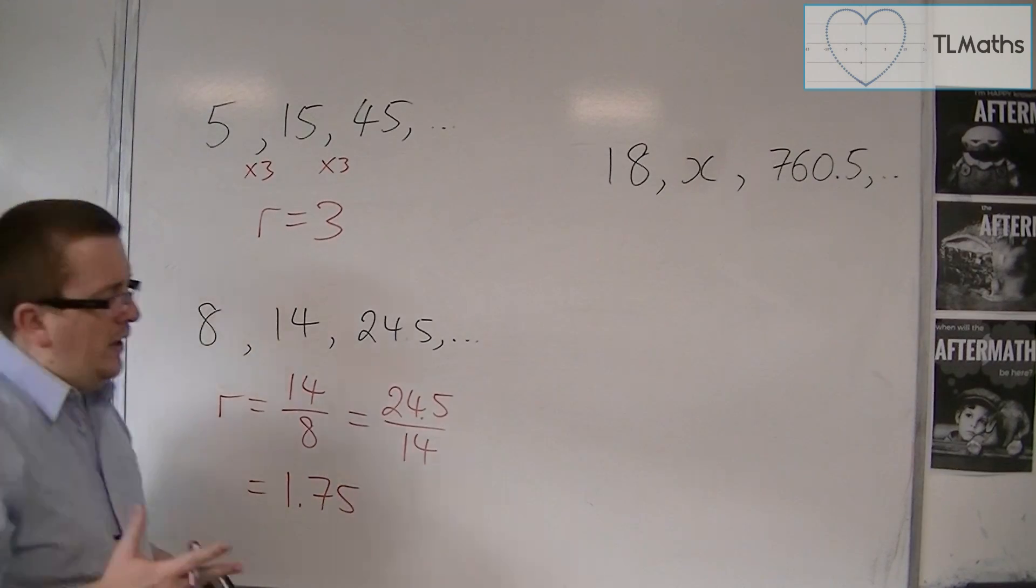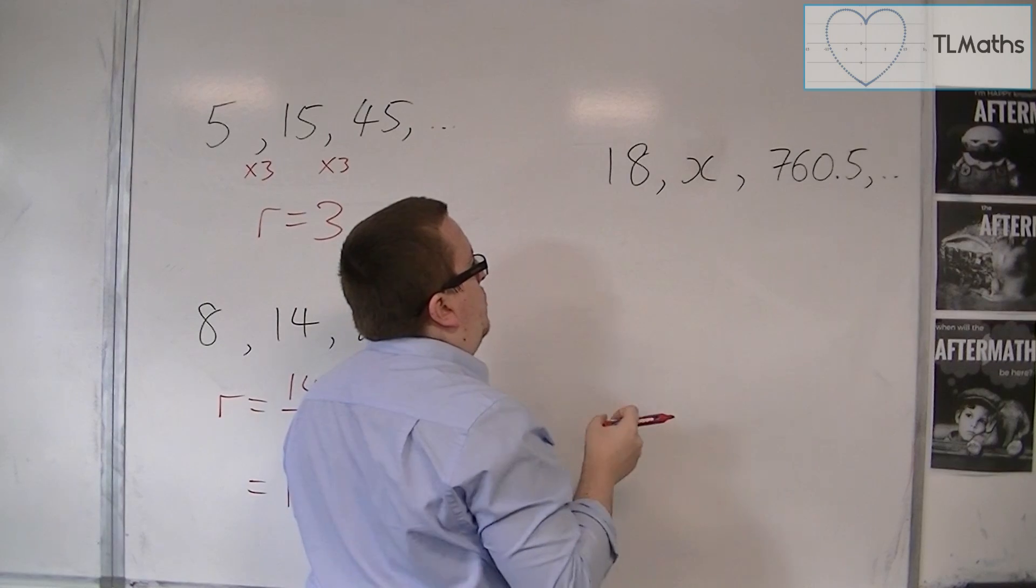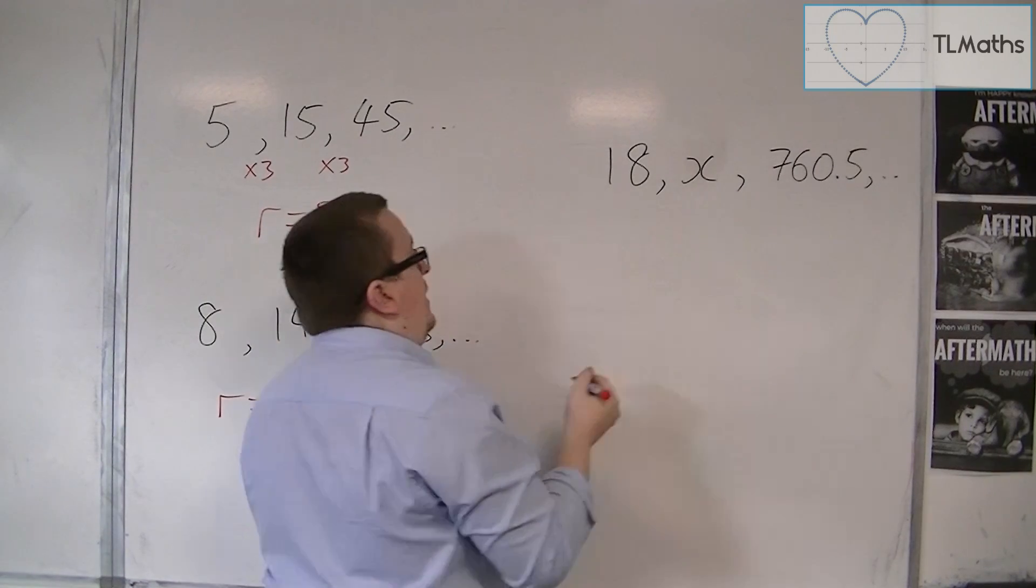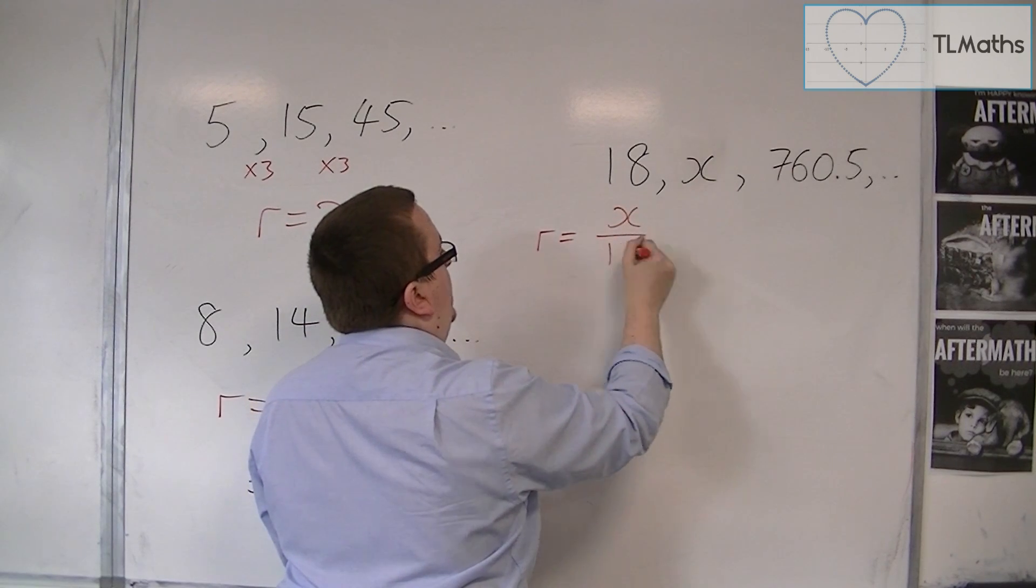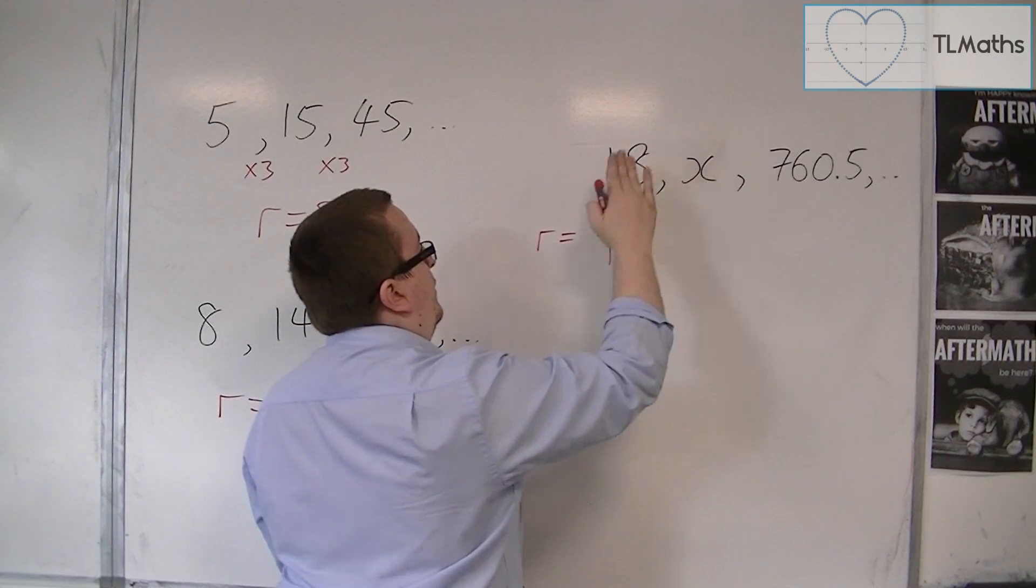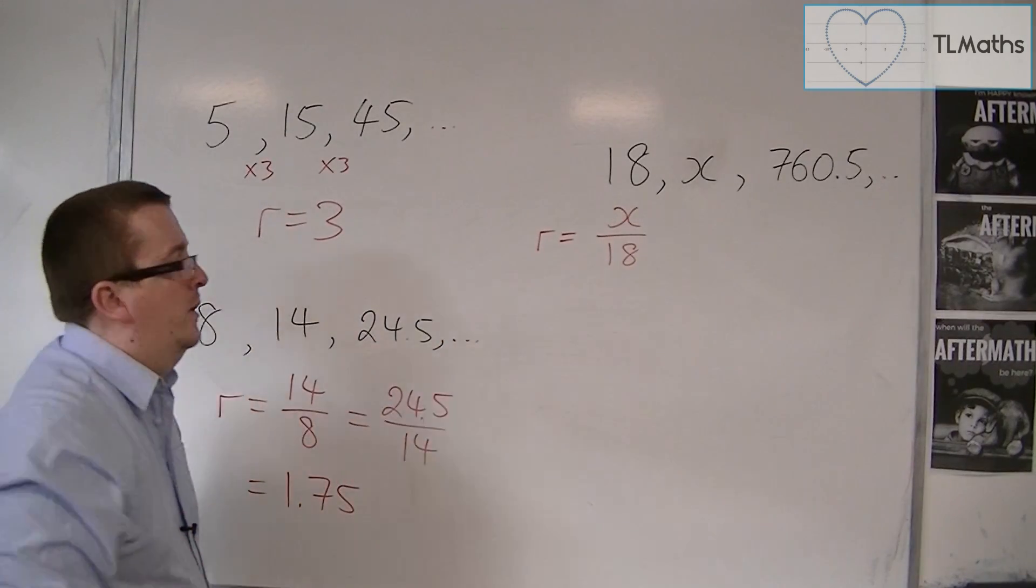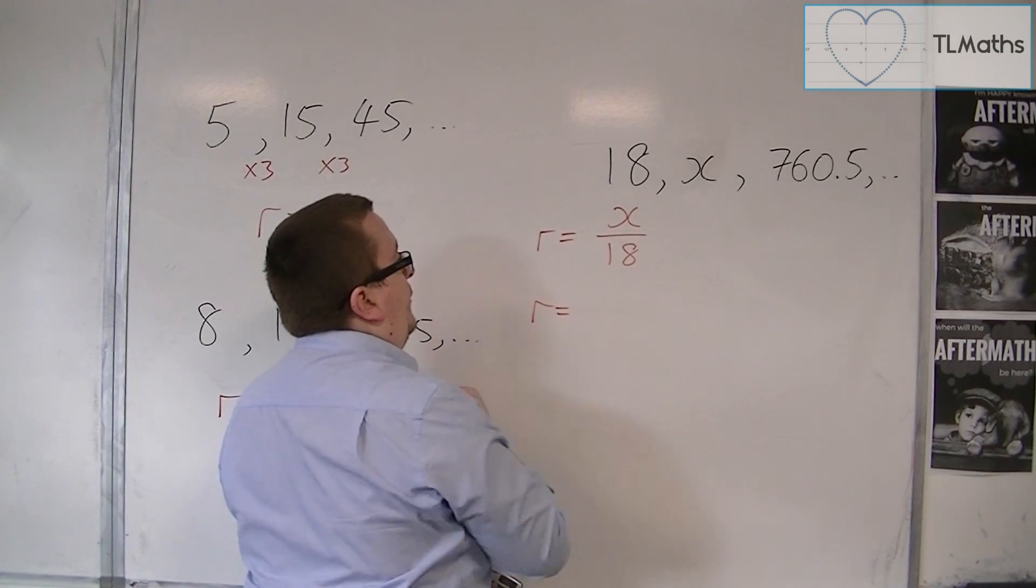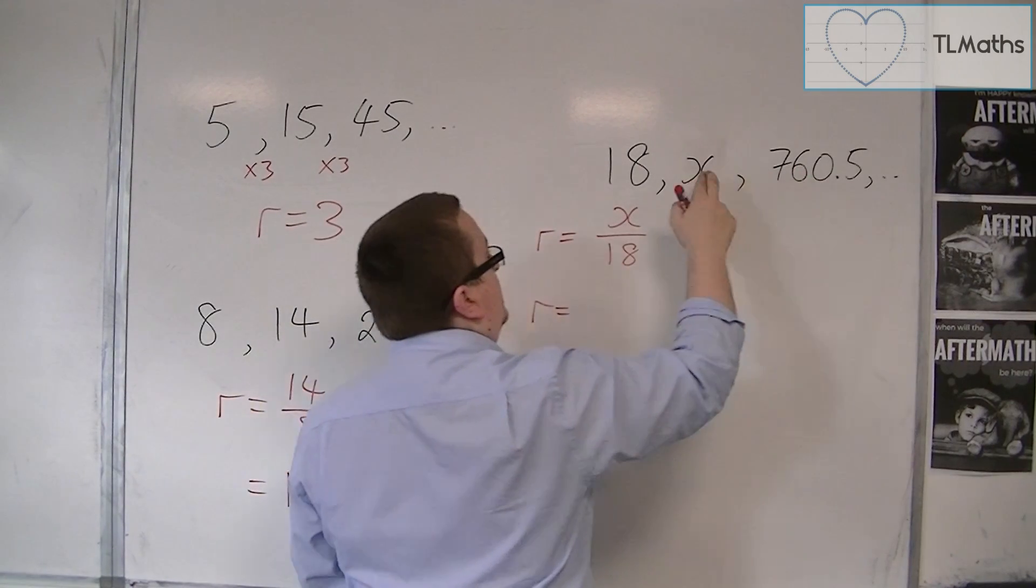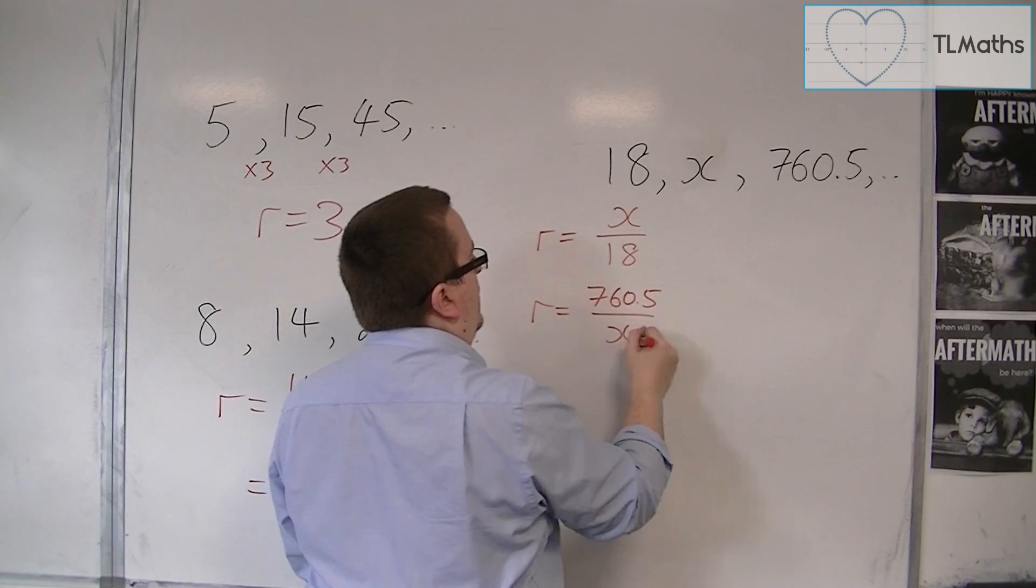So I'm going to show you two ways of doing this. The first way would be to say, well, r must be x over 18. That term divided by that term. We've seen that method works down here, so it should work again. We could also say that r is this term divided by that term. So 760.5 divided by x.